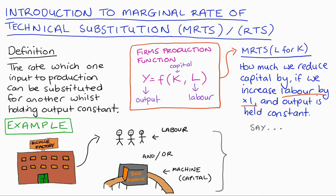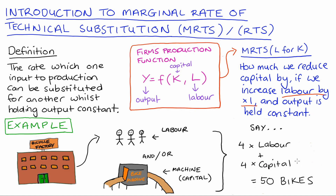Let's say the firm can produce 50 bikes by using four units of labour and four units of capital. Our MRTS of labour for capital would then equal the decrease in the level of capital if we increase labour by one and output stays constant at 50.